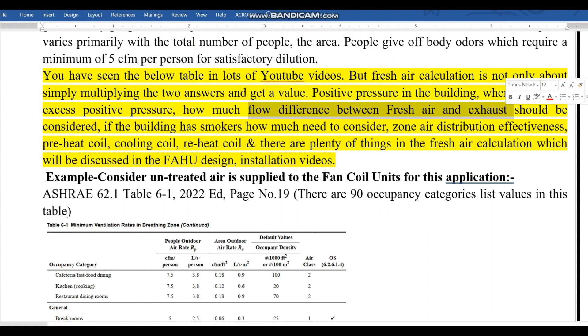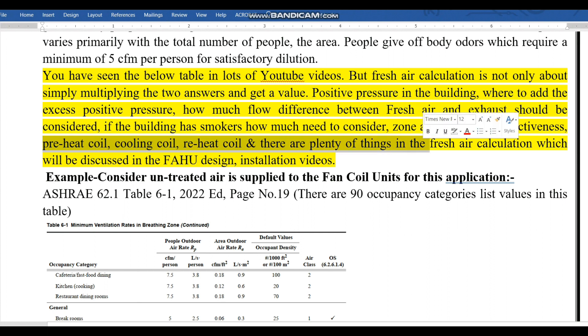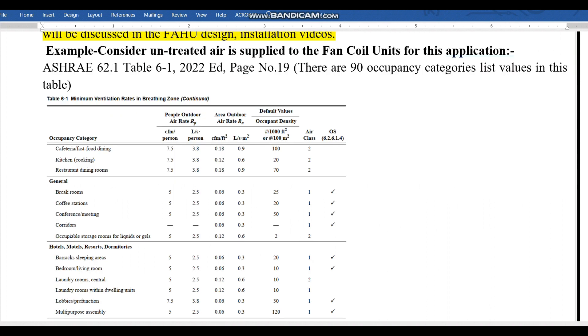How much flow difference between pressure and excess should we consider? It's not simply considering 10 percent fresh air for total air. We need to see the total supply air flow. If the building has smokers, how to consider the flow rate, zone air distribution effectiveness, how to design preheat coil, cooling coil, reheat coil. There are plenty of things in fresh air calculation. I will shortly post a clear video about FAHU design, installation, and testing.